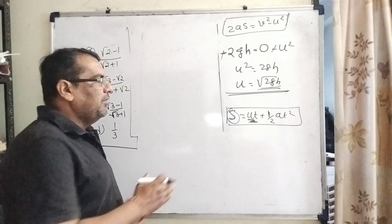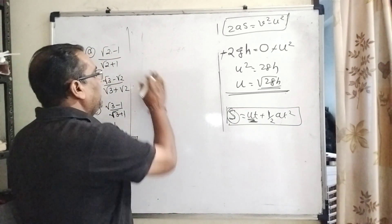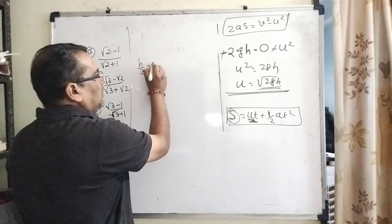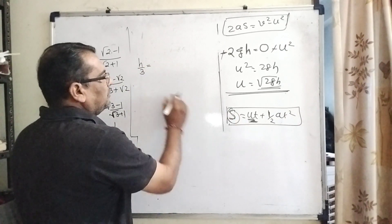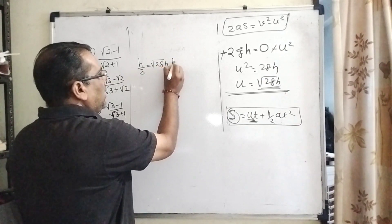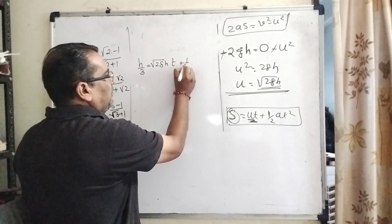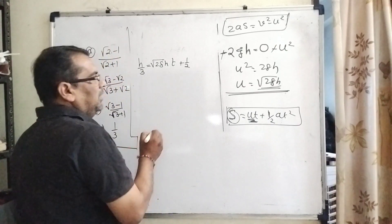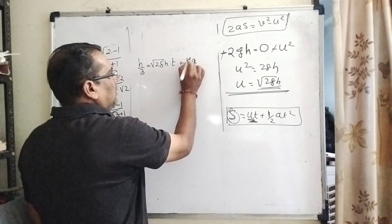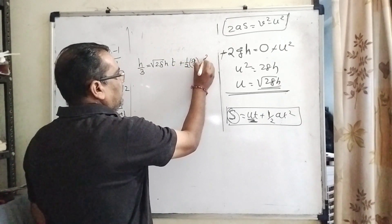Now substituting s = h/3 and initial velocity u = √(2gh), we get h/3 = √(2gh)·t + (1/2)(-g)t².